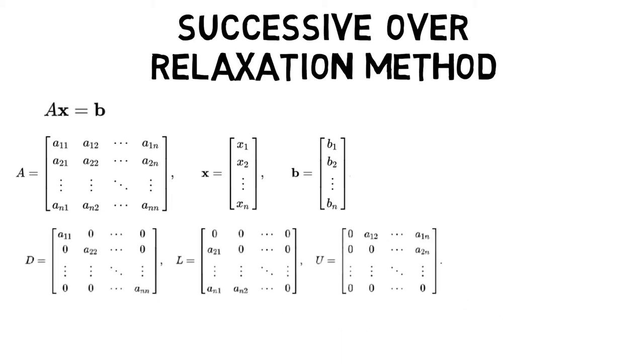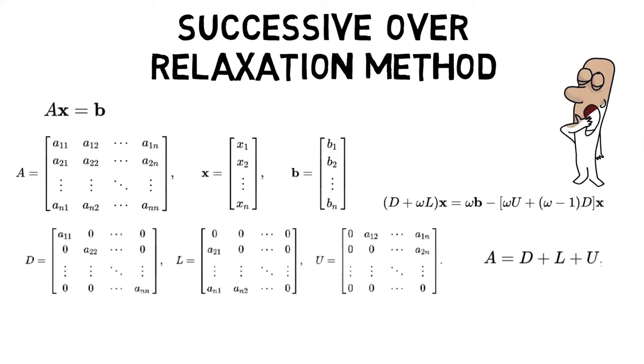Then A can be decomposed into diagonal component D, strictly lower and upper triangular components L and U such that A equals to the sum of D, L and U. The system of linear equations may be written as (D + ωL)x = ωb - (ωU + (ω - 1)D)x for a constant ω greater than 1 called the relaxation factor.